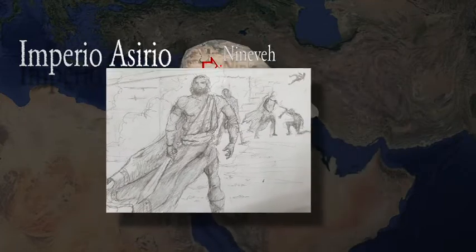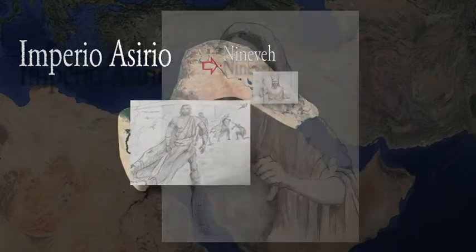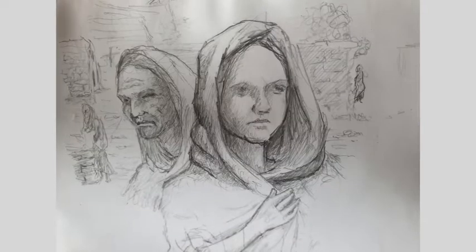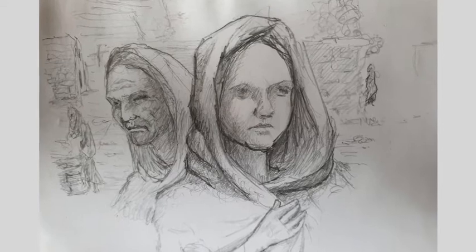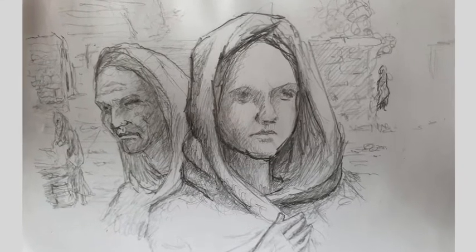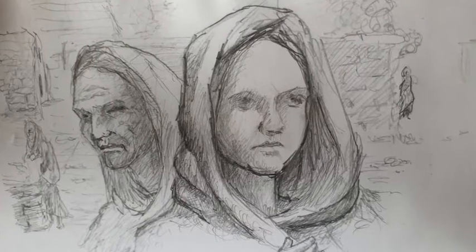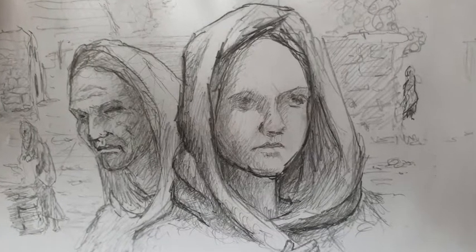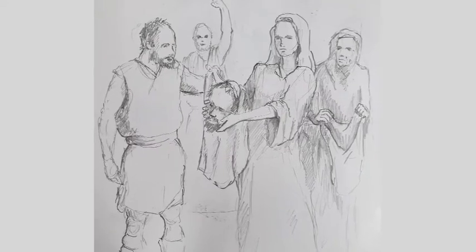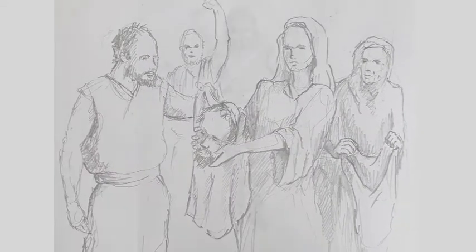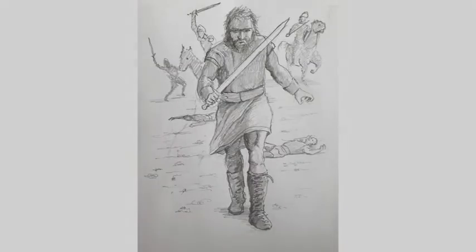Betulia sería la próxima ciudad que se disponía a atacar, pero Judit, una de sus habitantes, estaba dispuesta a defender a su gente y acompañada de su criada se encaminó rumbo al campamento del comandante enemigo. Su plan: seducir a Olofernes, embriagarlo y asesinarlo. De regreso en su ciudad, enseñó la cabeza a sus soldados y estos contraatacaron a los asirios, quienes sin su comandante enfrentaron una inminente derrota.